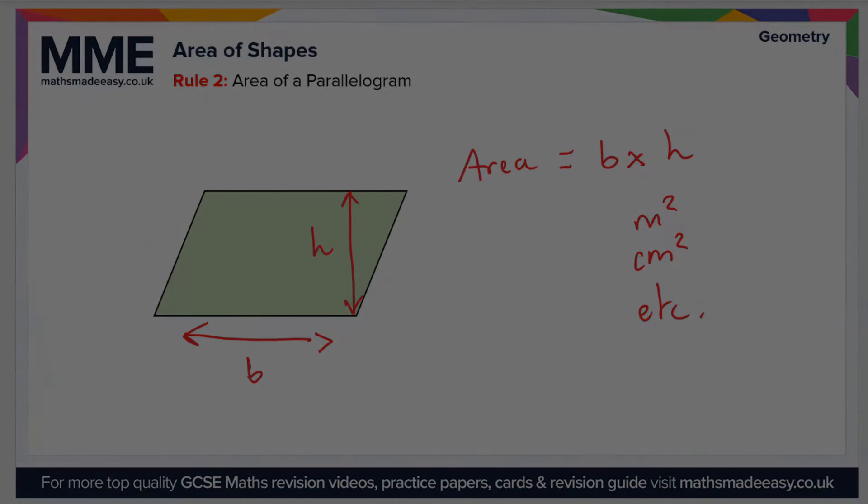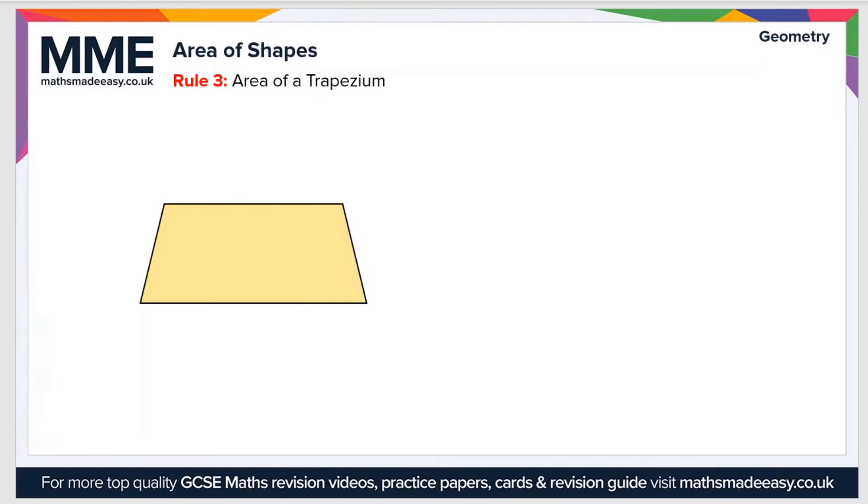The third rule that we'll see in this video is the area of a trapezium. Now a trapezium has two parallel sides—I will call them a and b—and let's call the perpendicular height h as before. So the formula for the area of a trapezium is area equals half a plus b times h. What does this exactly break down to? Well, this is kind of like the average of the two parallel sides times by the height. Once again, the units: meter squared, centimeter squared, etc., depending on what the units of a, b, and h are.